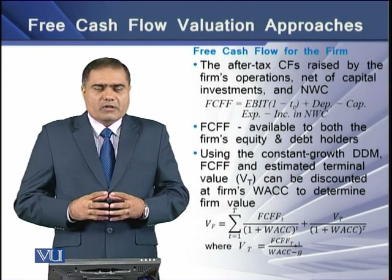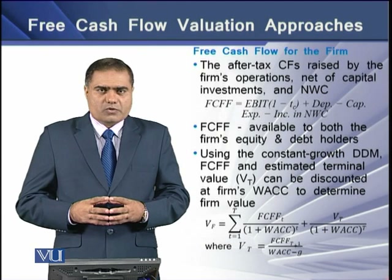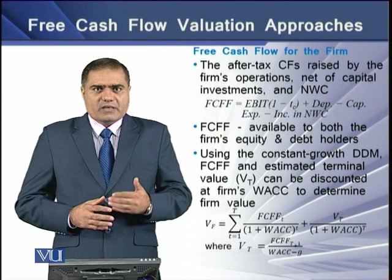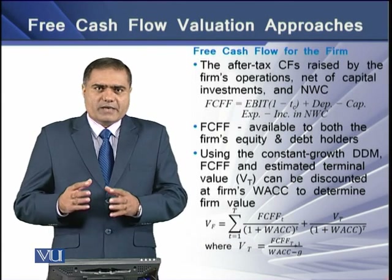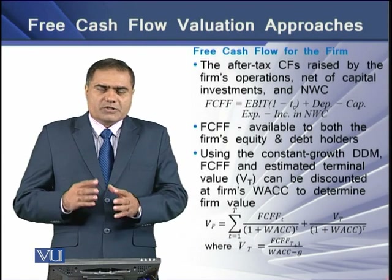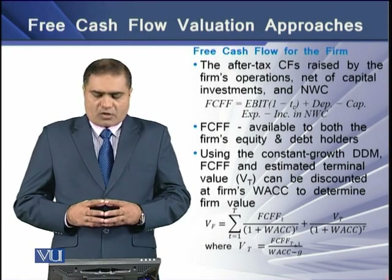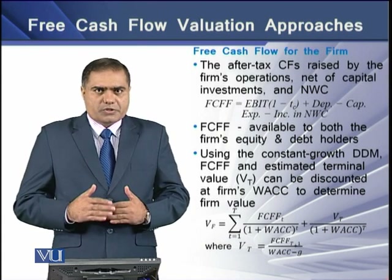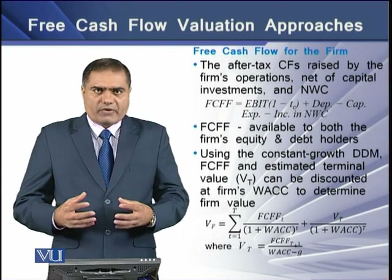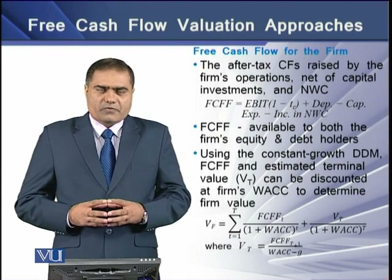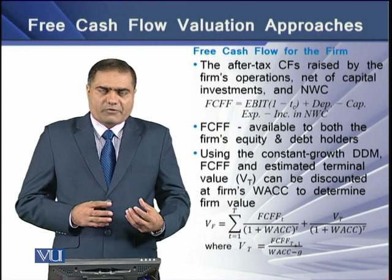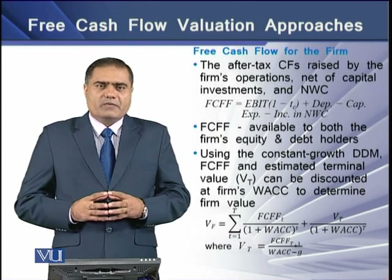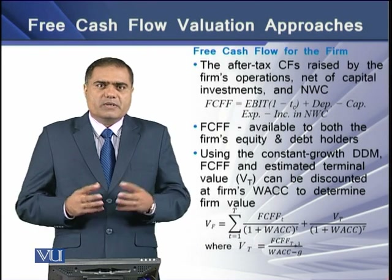To determine the value of the firm using free cash flows to the firm, we have two variables: the first is the yearly free cash flows to the firm, and the second is the firm's terminal year free cash flows. Both are discounted at the firm's WACC. The resulting value is the firm's fair market value, and dividing this by the number of shares gives the free cash flow of the firm per share.